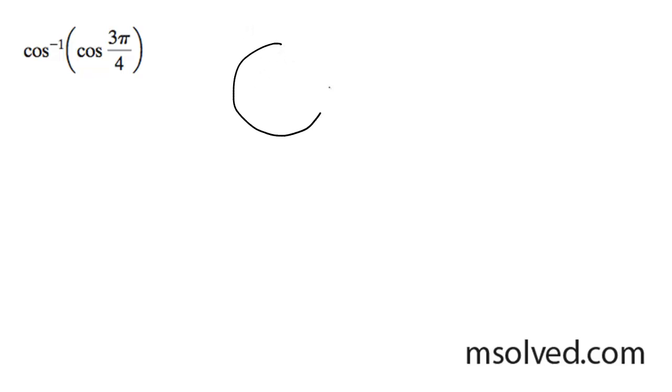For the cosine of 3 pi over 4, 3 pi over 4 on the unit circle is going to be over here.